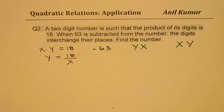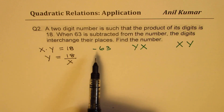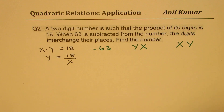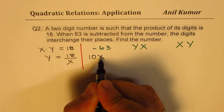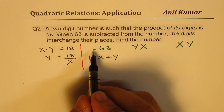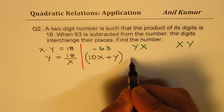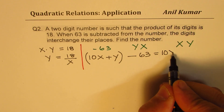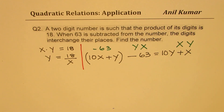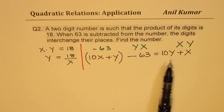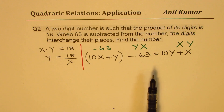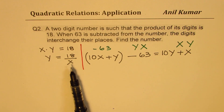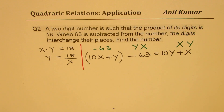We are given two conditions. The number xy means 10x plus y. If you subtract 63 from this number, the digits interchange, meaning the result is 10y plus x. So the equation is: 10x plus y minus 63 equals 10y plus x. I'd like you to read this statement once again and see how we are forming the equation. You can substitute y equals 18 over x, giving the equation in one variable.